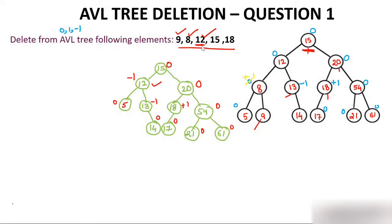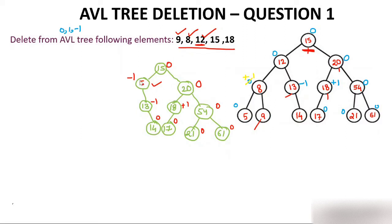Since we are deleting 12, we replace it with its predecessor 5. Node 5 comes up to position 12 and is removed from its old position. Now calculate balance factor: the balance factor of node 5 (now at 12's position) is left = 0, right has length 2, so balance factor becomes minus 2. This violates the AVL property, so we need to rotate.